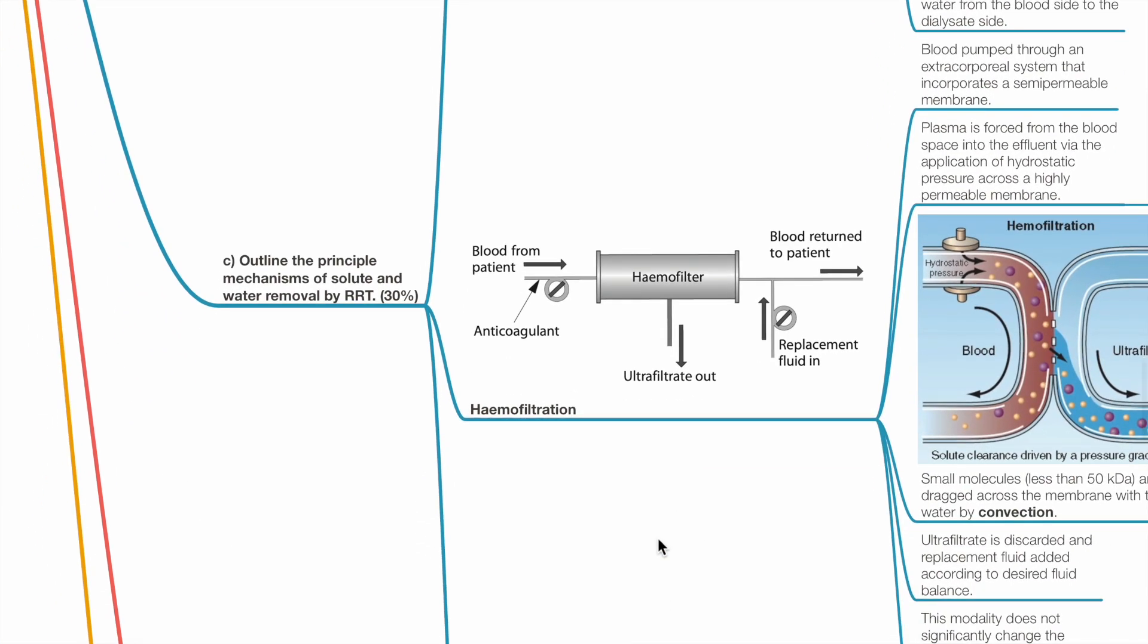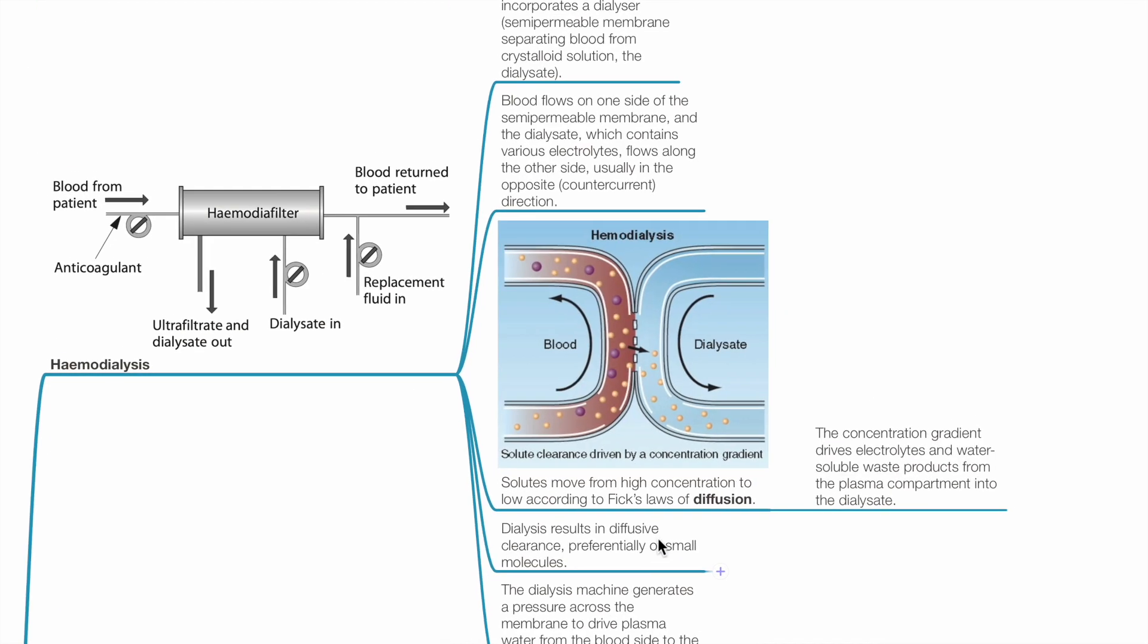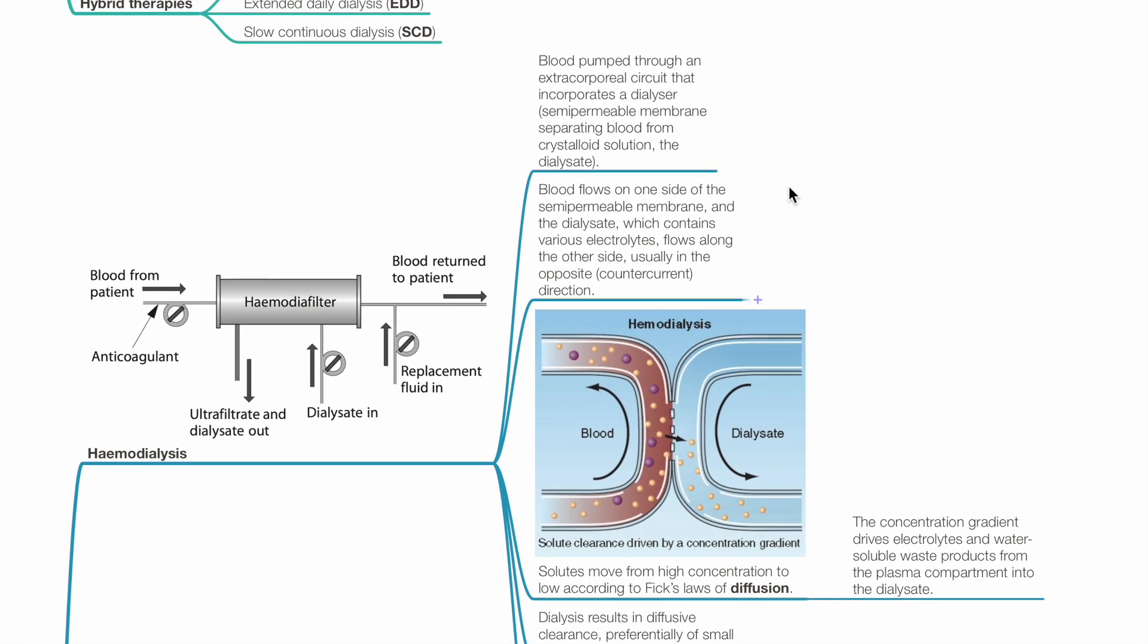Outline the principal mechanisms of solute and water removal by RRT. In hemodialysis, blood is pumped through an extracorporeal circuit that incorporates a dialyzer, which is a semi-permeable membrane separating blood from crystalloid solution, the dialysate.